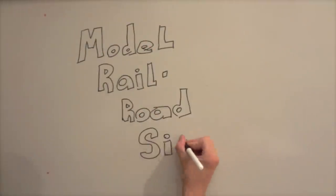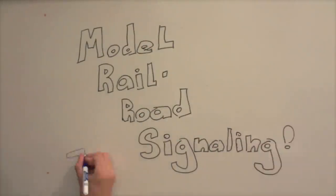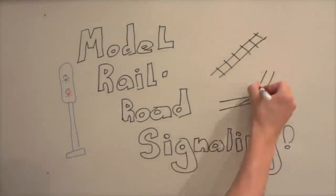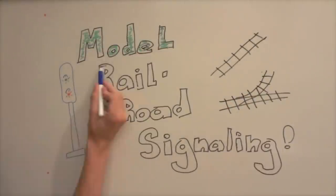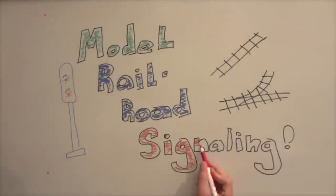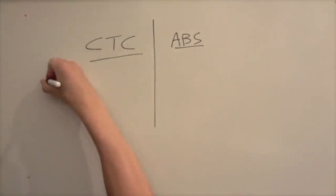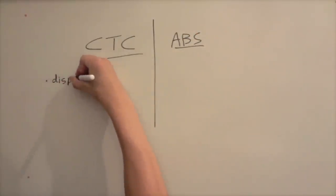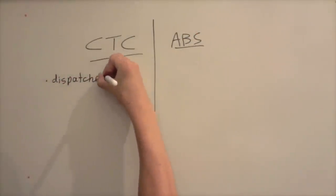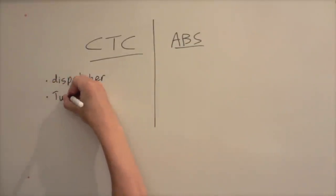All right, so for model railroad signaling and in that case prototype signaling as well, there's a lot of terms and definitions that might be useful as we go forward. So real quick in the next few minutes here, I'm just going to go over some facts and information about signaling that might be beneficial as we move forward. So the first thing to consider when you're talking about model railroad signaling is that you have two types. You have CTC which is centralized traffic control, and then you also have ABS which stands for automatic block signaling.